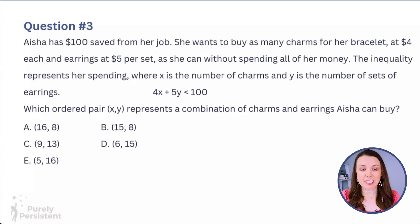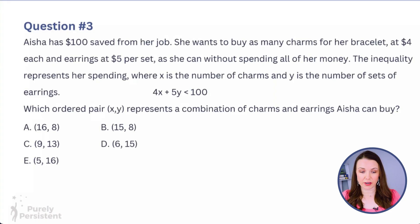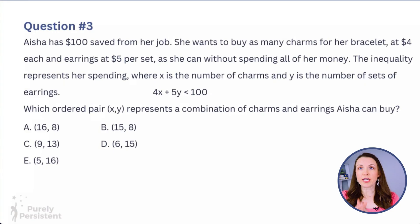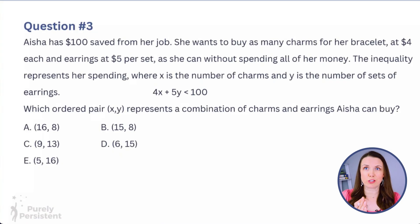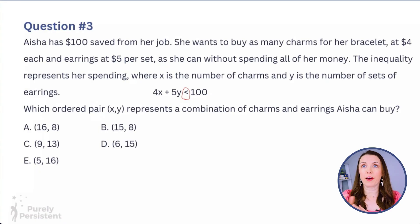Question three: Aisha has $100 saved from her job. She wants to buy as many charms for her bracelet at $4 each and earrings at $5 per set as she can without spending all of her money. The inequality represents her spending, where x is the number of charms and y is the number of sets of earrings. Which ordered pair represents a combination she can buy? She wants to spend less than $100 — not equal to, so really up to $99.